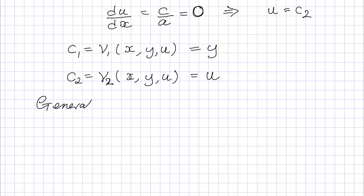And so now we know the characteristics and we can write down the general solution as v2 equals some arbitrary function of v1. So in this case this tells us u equals some arbitrary function of y.